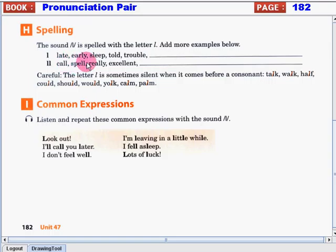After we've talked about the weak pronunciation of the word will, let's move on to our spelling. The sound L is spelled with the letter L. Take a look at the following words here. Let's take a look at those words with single L in the spelling, like the word late. Now let's move on to those words with double L or LL in the spelling, like in the following words: Call, Spell, Really, Excellent.